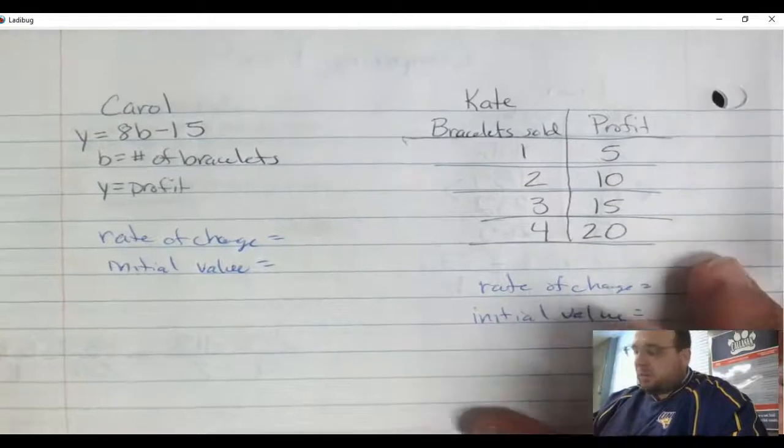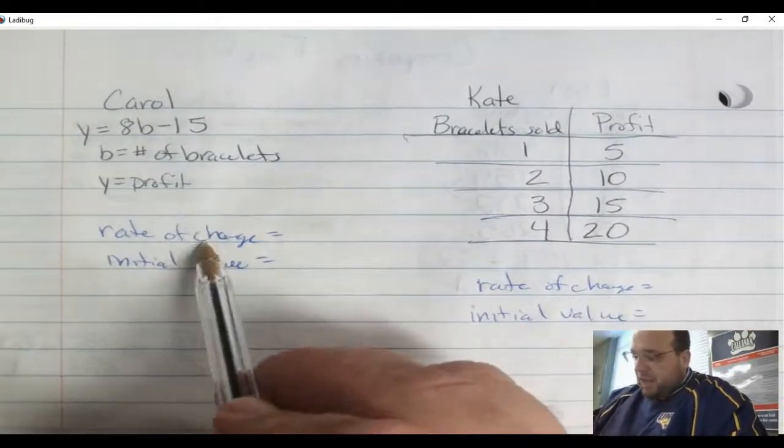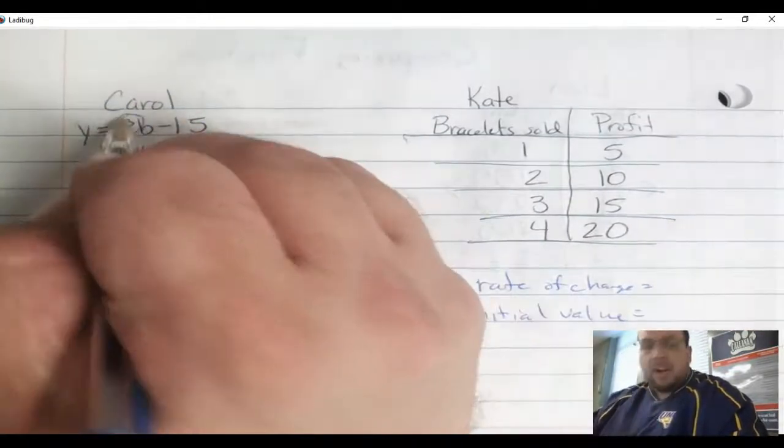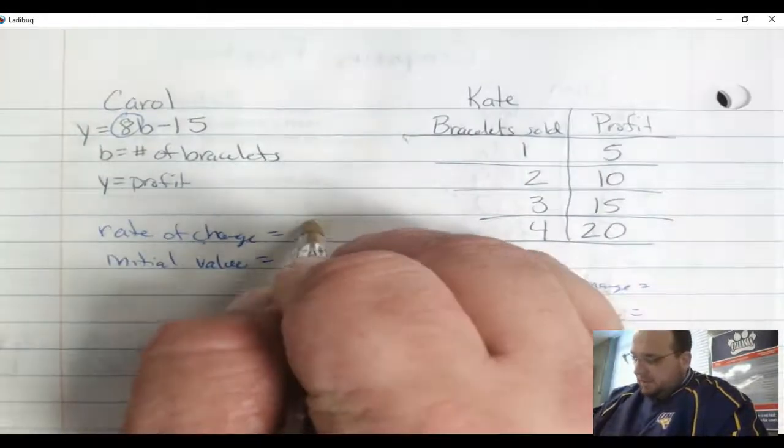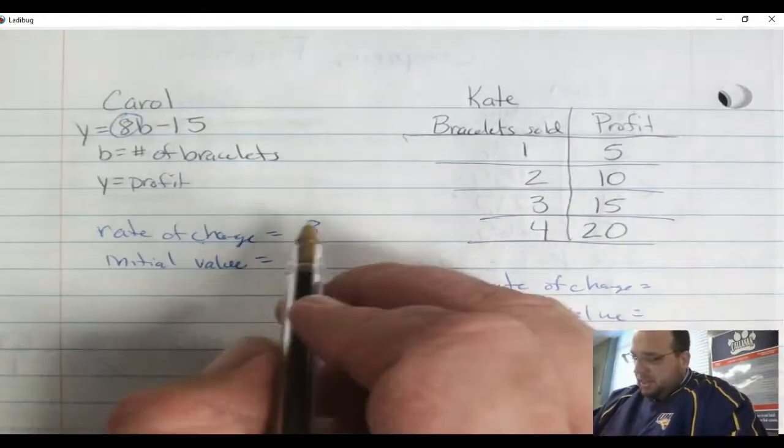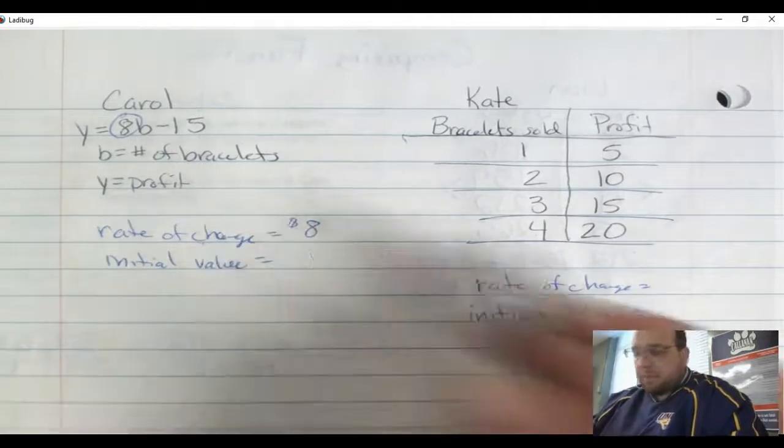Like I talked in the previous one, it's really easy to find the rate of change. That's what the slope is. So it's right here. Your rate of change in this one is 8, and it looks like that's what they're going to charge - $8 per bracelet.